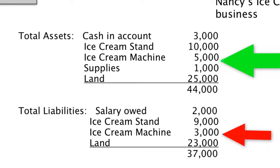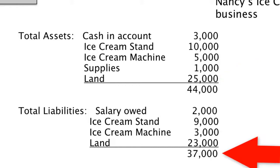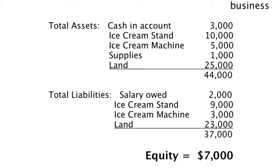Then we look at the land. She bought that plot of land — it's worth $25,000 — but she still owes $23,000 on it, so she's only paid off $2,000. When we sum up all of her liabilities, Nancy owes $37,000. So we take the total assets of $44,000, subtract the total liabilities of $37,000, and Nancy's equity in this business is $7,000.